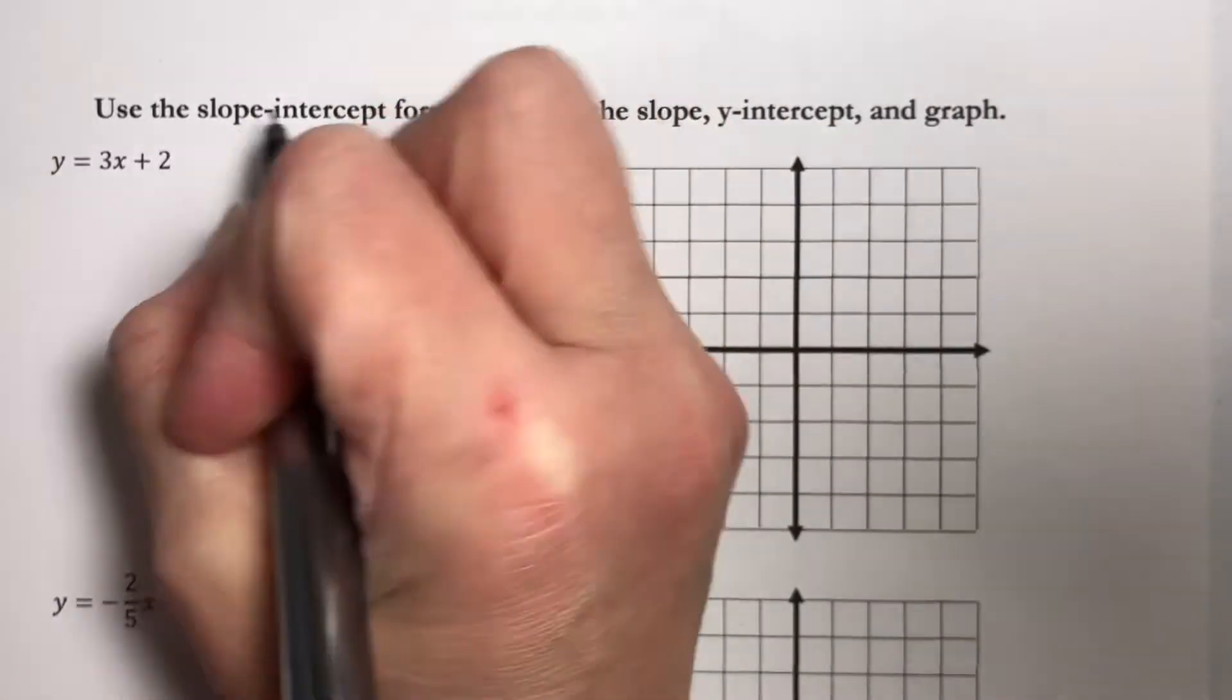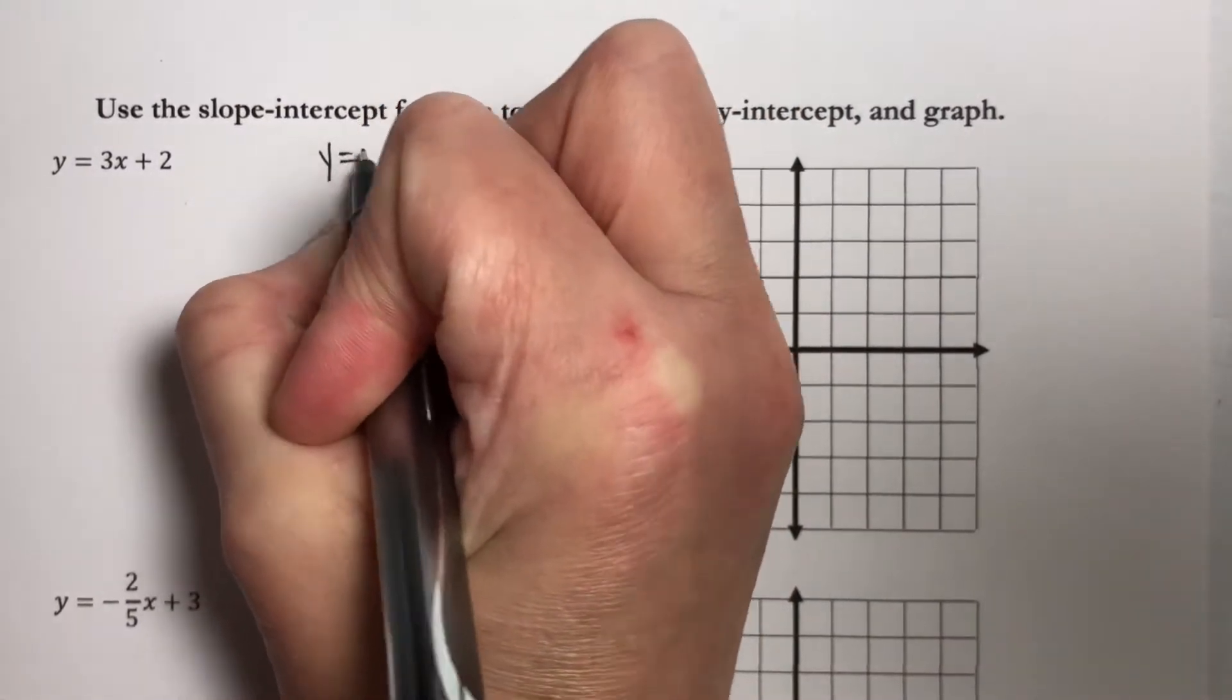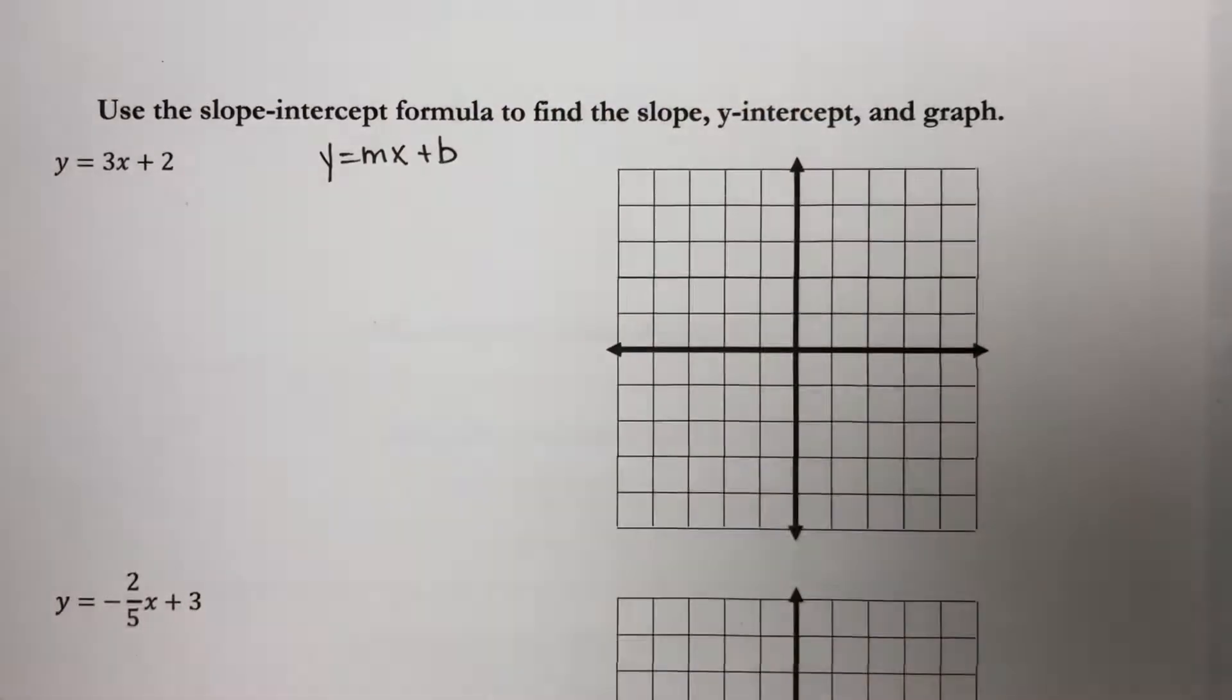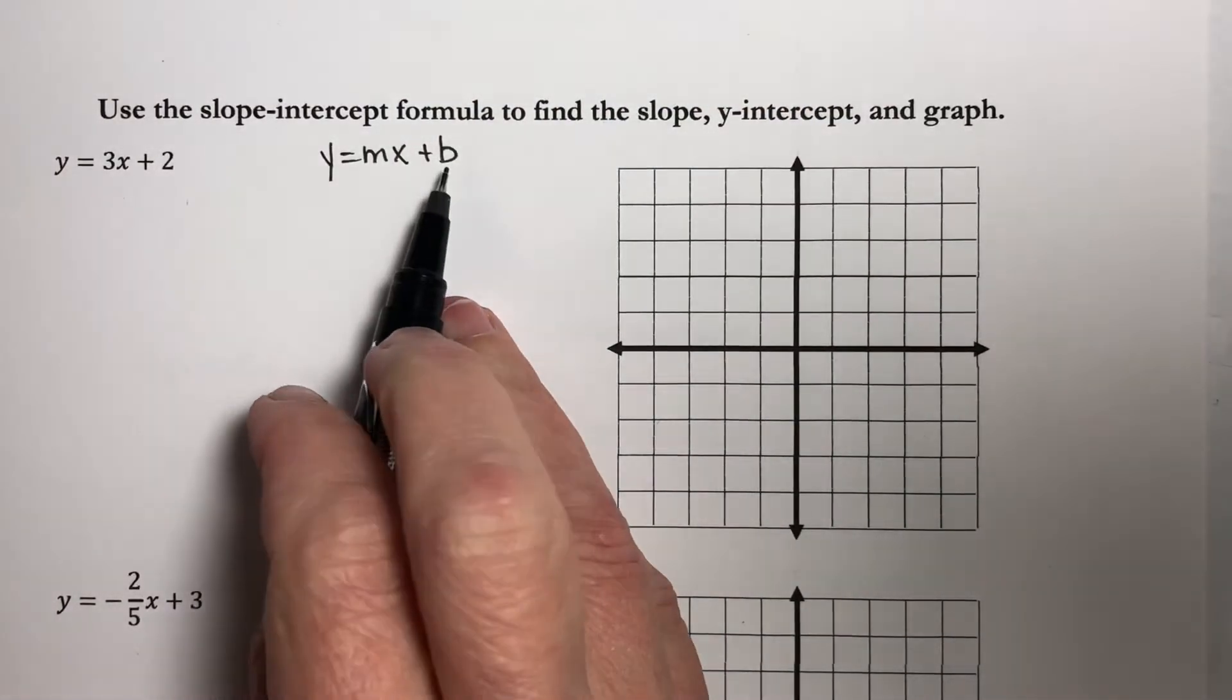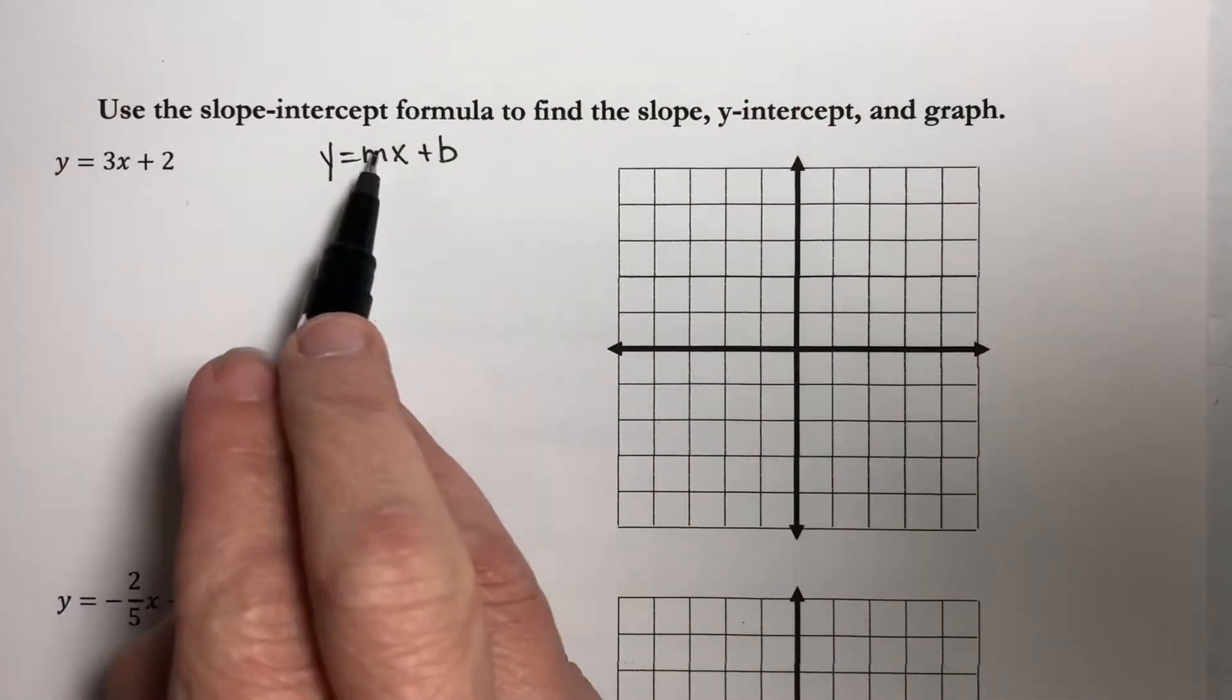Now the formula, the slope-intercept formula, is y equals mx plus b. b is our y-intercept, m is our slope.